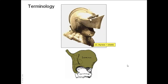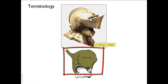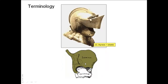The thyroid gland derives its name from the thyroid cartilage. The thyroid cartilage resembles a shield, and that's why it was called the thyroid cartilage, because in Greek, 'thyros' means shield.